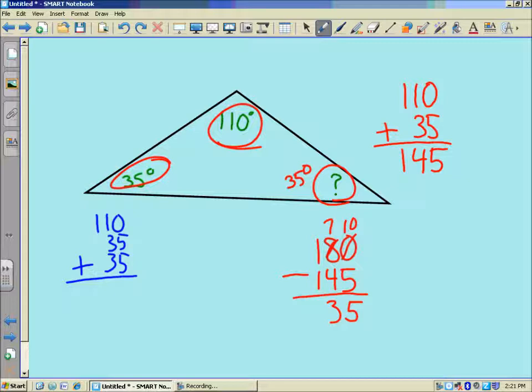1's place, I've got 5 plus 5 is 10. Carry the 1, 10's place. 1 plus 1 is 2. Plus 3 is 5. 5 plus 3 is 8. And the 100's place, I have just that 1 to deal with. And we're back to what you would hope we would find. 180 degrees in that triangle.